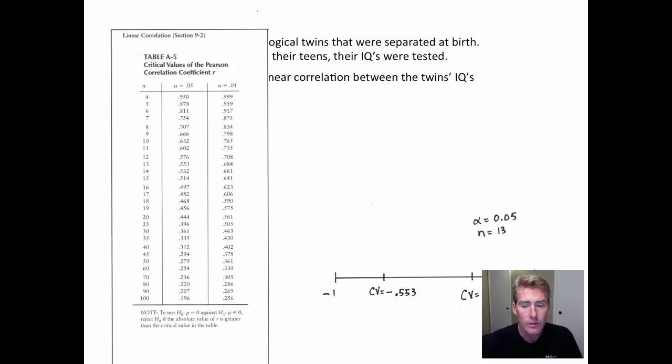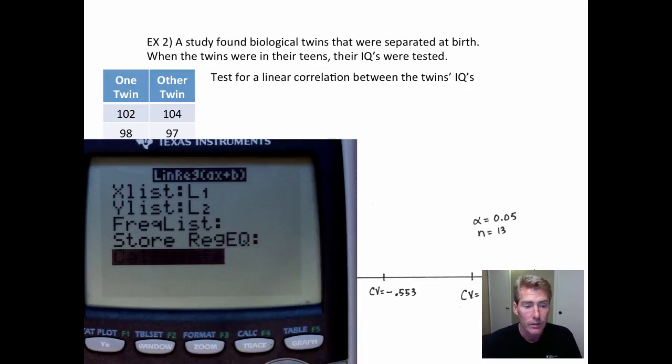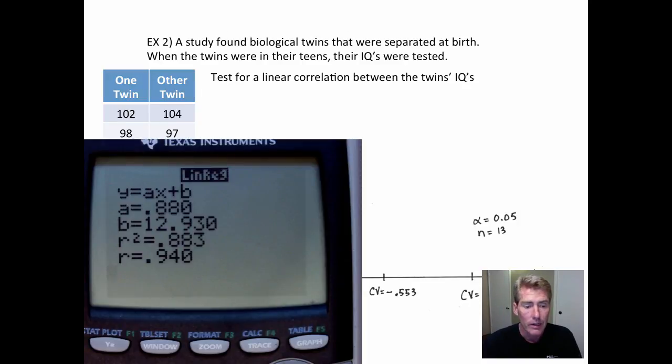Then a real numerical example. So these biological twins happen to be separated at birth. Psychologists found them and they tested their IQ. So they were raised apart, raised by different families. Biologically, they were identical. And the psychologist wanted to know, is there a relationship? So test for a linear correlation between their IQs. So here would be one twin and then the brother or the sister, their IQ. You type all of the data into list one and list two. Meanwhile, I'm going to get the critical value. So this was n equals 13. And again, I'm using 0.05. So 13 and 0.05 is this one, 0.553. So you put that on the table and the negative of it on the left.